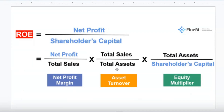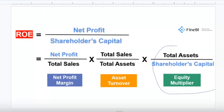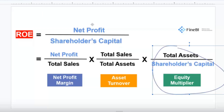The first section is net profit divided by total sales. This gives you your net profit margin, which basically tells you how efficient you are at turning your sales into profits.